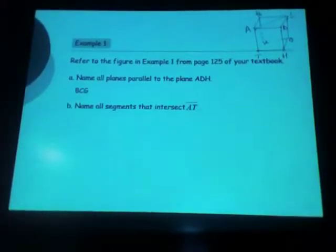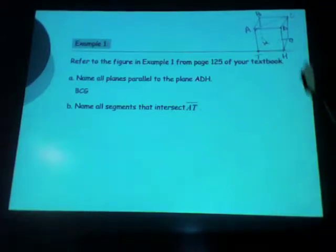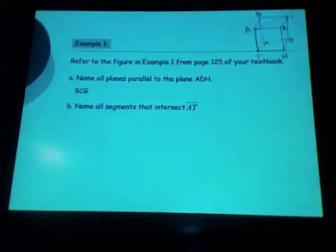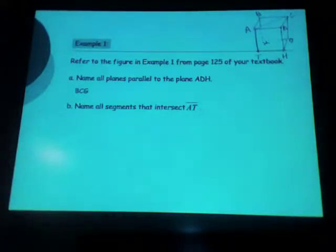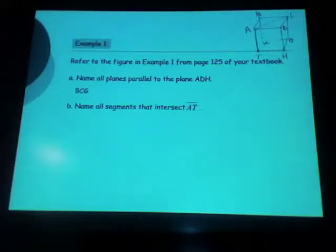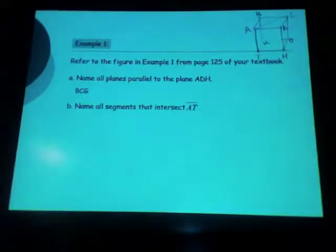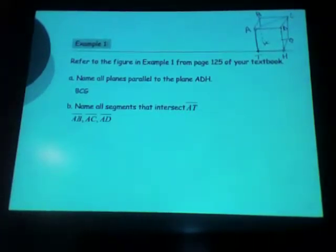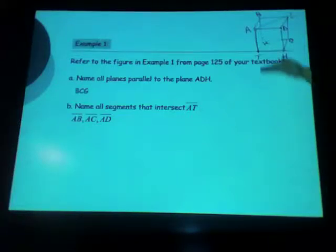The second question says name all segments that intersect at A-T. Give me a segment that intersects A-T. C-A, K-T, T-H, D-A, and B-A. So use proper notation because they're segments. It's also T-H and T-K.